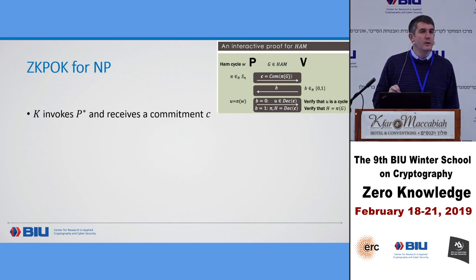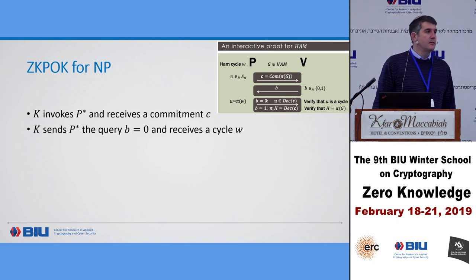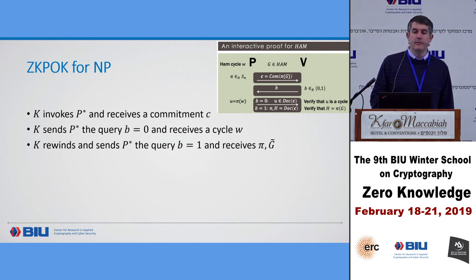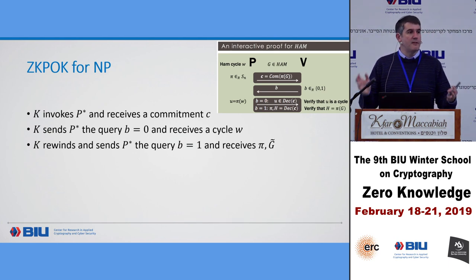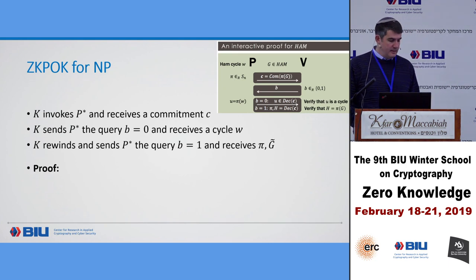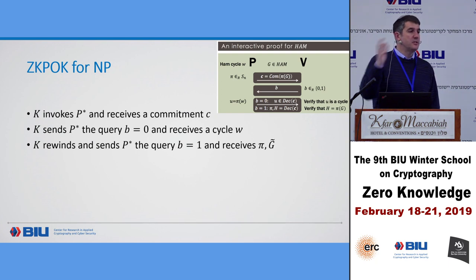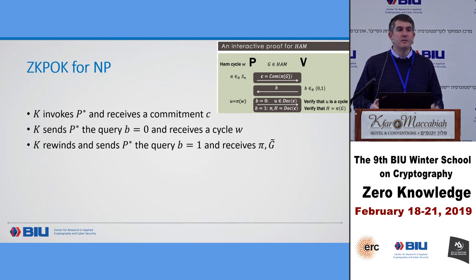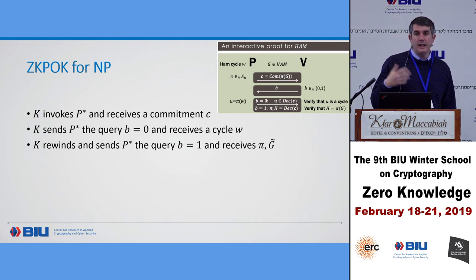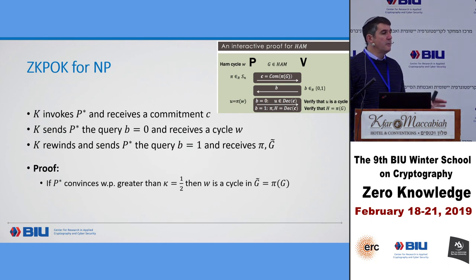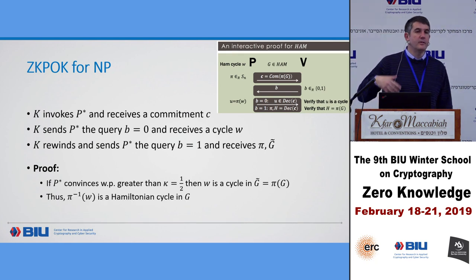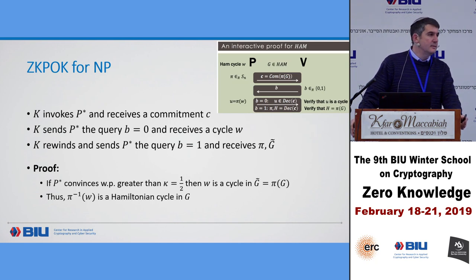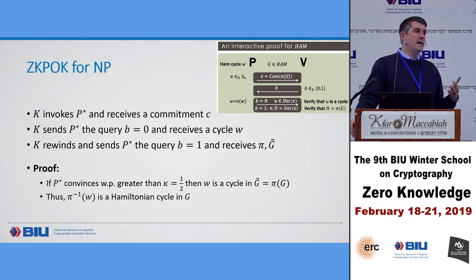The extractor K invokes the prover and receives a commitment. Then the extractor sends both query zero and query one. When it sends query zero, it gets back a cycle in the graph. When it sends query one, it gets the permutation and the graph isomorphic to the original by that permutation. Once it has both, it can extract the cycle by applying the inverse permutation to the cycle — that should be a Hamiltonian cycle in the original graph if both responses are correct.